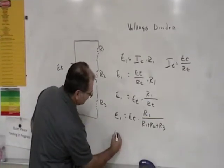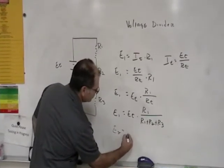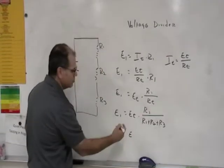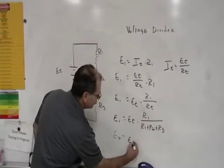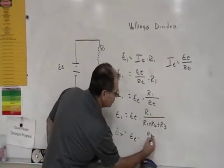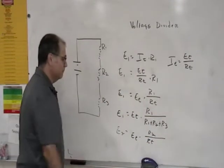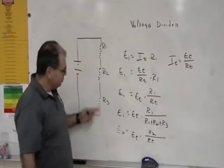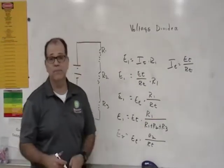If I'm looking for E2, it's the same equation except substitute the values out. It would be the total voltage times R2 divided by RT. And if you wanted an E3, just swap them out.